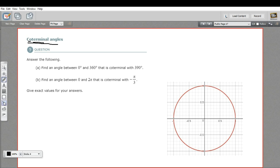So angles that end in the same place. And since angles on the unit circle all start in the same place, a coterminal angle is going to look just the same.